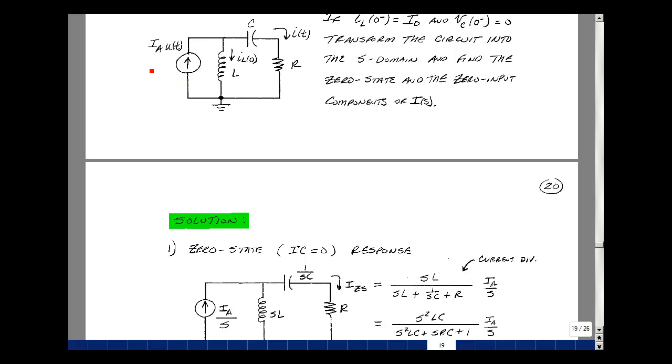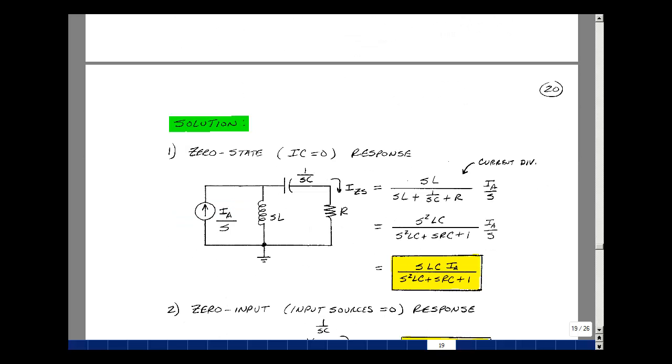So the zero state response is having initial conditions of zero. We're just going to have our transformed current source, which would be i sub a, an amplitude, multiplied by u of t, so it would be 1 over s, and then we just have sL and 1 over sC and the value of r. We can do a current divider, where we take this impedance, which would be sL, divided by the sum of the two, which is sL plus 1 over sC plus r, times our input, which is i sub a over s.